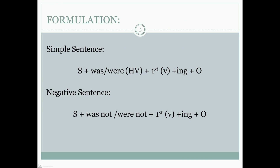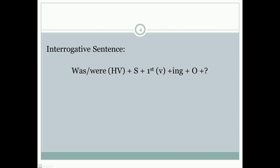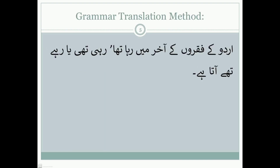The formula is: subject plus helping verb — that is 'was' and 'were' — along with the first form of the verb plus '-ing' and object at the terminal position. Negatives are made by adding subject plus 'was not' / 'were not' along with the first form of the verb plus '-ing' and object. For interrogative sentences, the helping verb comes in the initial position: 'was'/'were' along with subject, first form of the verb plus '-ing', object, and a question mark.